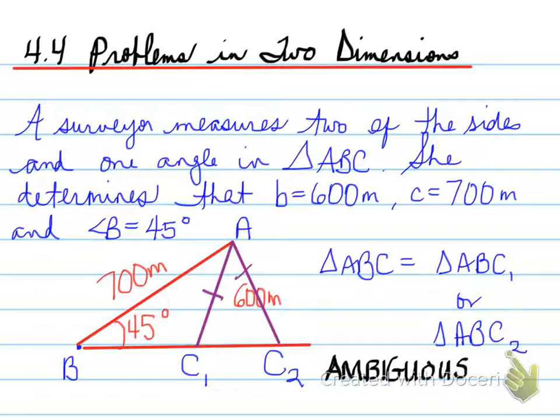This, in its essence, is known as the ambiguous case for sine law. Many students have difficulty with this concept.